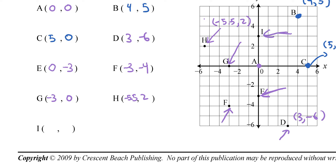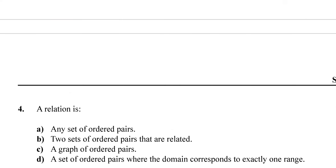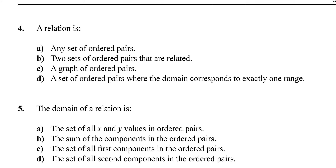Finally, letter I: X is 0 since you don't go left or right, but you go up 3 units, so I is 0 comma 3. Hopefully the first few questions aren't too bad.